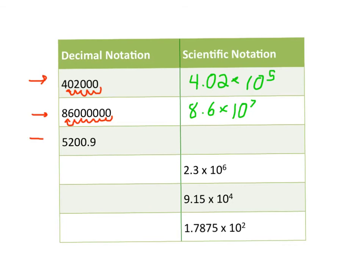Row number 3. The decimal isn't at the end of the number, but that's fine. I'm just going to start where the decimal is and count over until I get to a number between 1 and 10. That's 1, 2, 3 hops. And so in scientific notation, this number can be written 5.2009 times 10 to the 3rd.